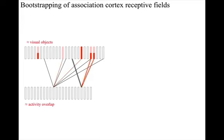If all the inputs from the source area are brought into the same phase, then it's more likely that active columns in the activity overlap area will be those with lots of inputs from a small number of columns in the visual objects area.